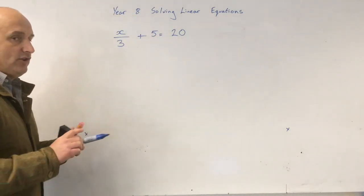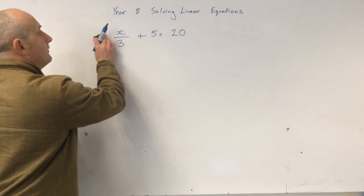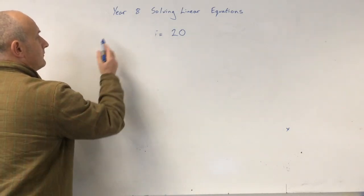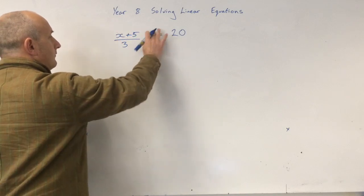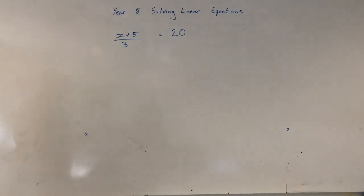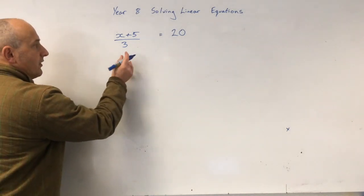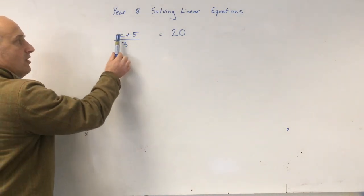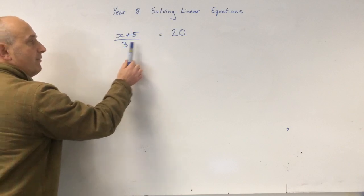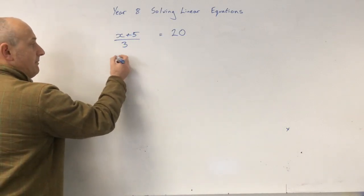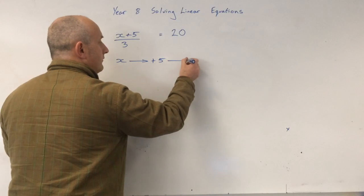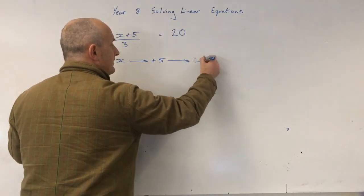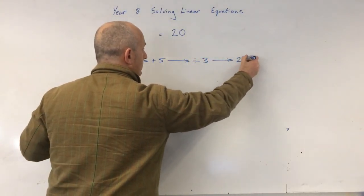Now what I'm going to do, I'm just going to modify this question ever so slightly. Can you see? It looks very similar, but it's changed. So now this translates to x plus 5 divided by 3 equals 20. Let's just do it backtracking. x plus 5 divided by 3 is 20.